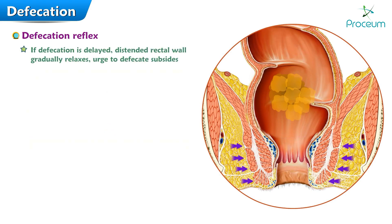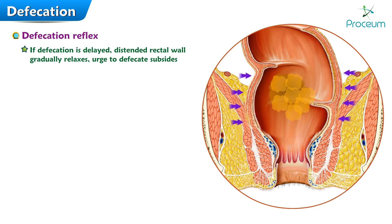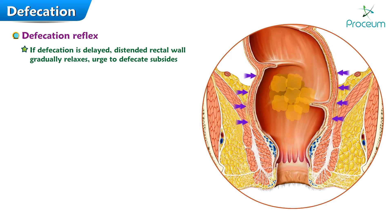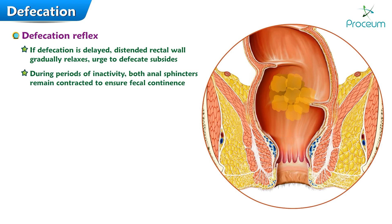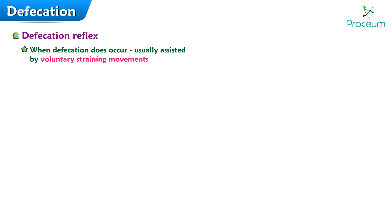If defecation is delayed, the extended rectal wall gradually relaxes and the urge to defecate subsides until the next mass movement propels more feces into the rectum, once again distending it and triggering the defecation reflex. During periods of inactivity, both anal sphincters remain contracted to ensure fecal continence.